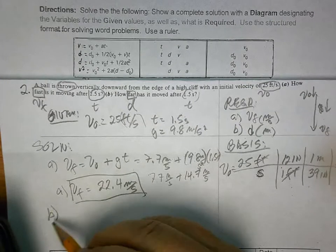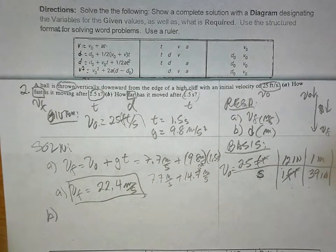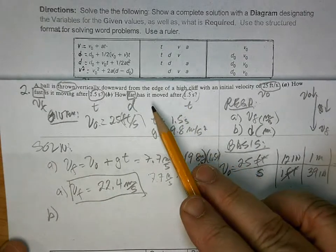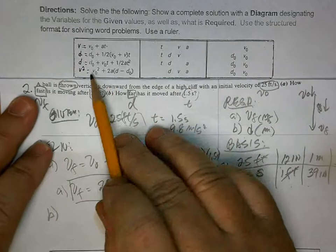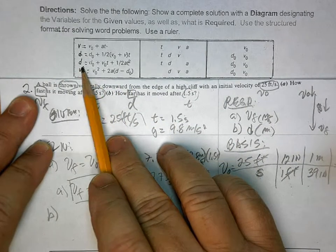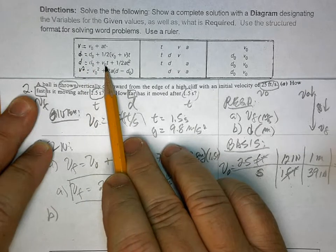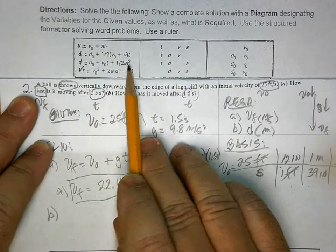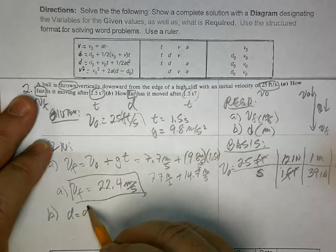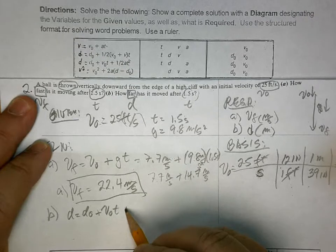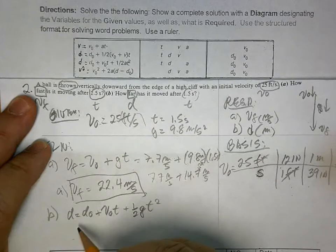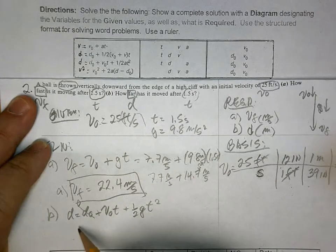VF is equal to 22.4 meters per second. That's A. And what is letter B? We're looking for distance. So, look at that. We're going to use, obviously, we have D. We have V0 is 0. VF, we're given this and we're given that. So, all you have to do is write the second one. D is equal to D0 plus V0T plus one half GT squared. This is 0. So,